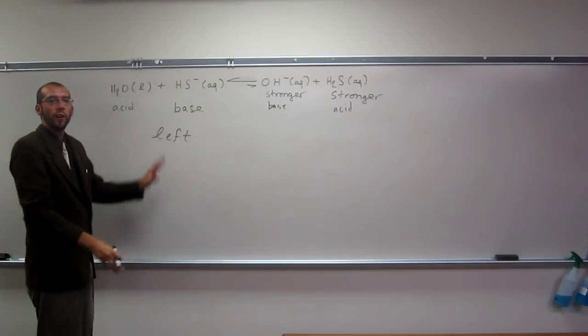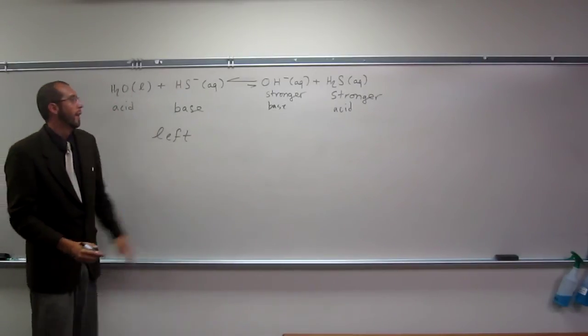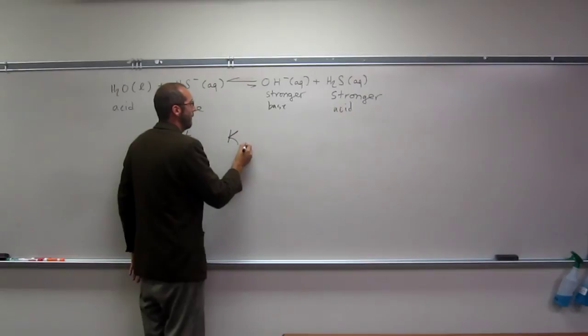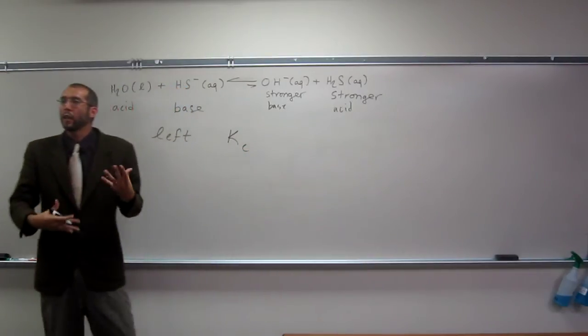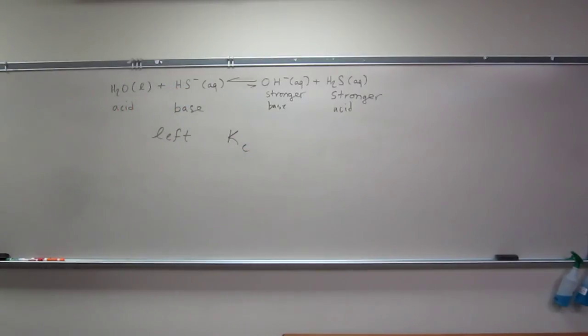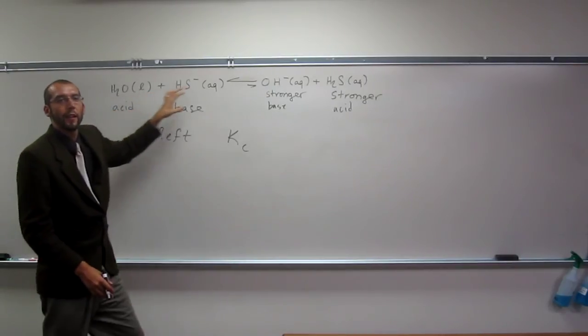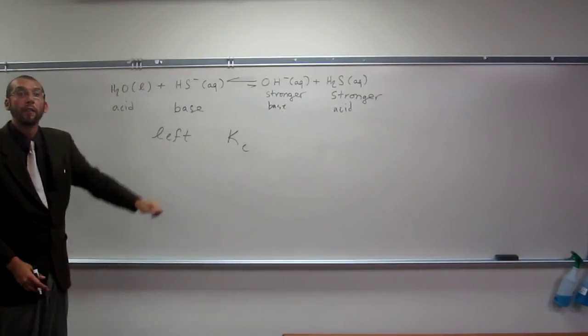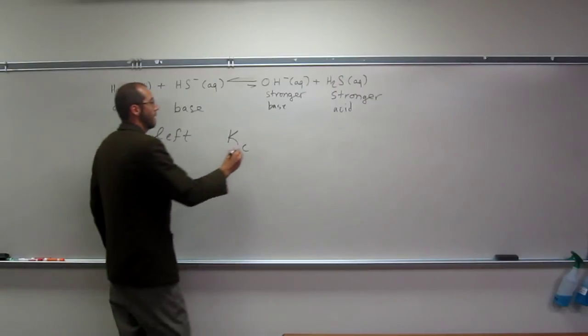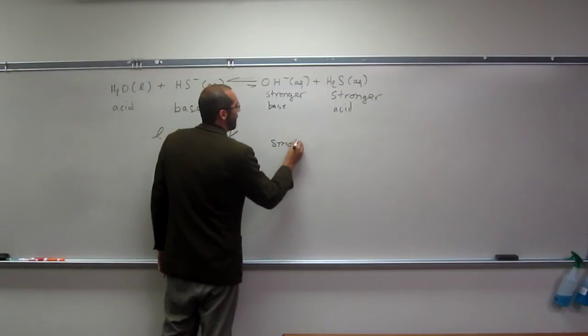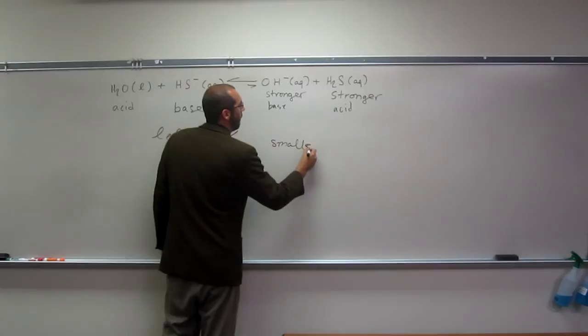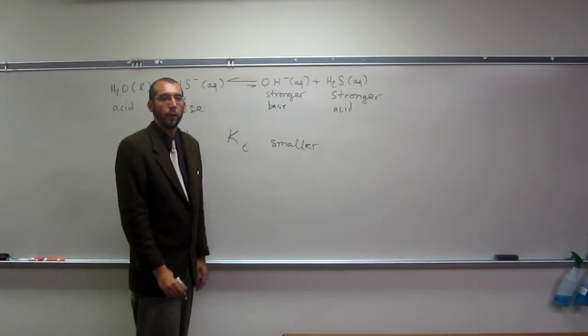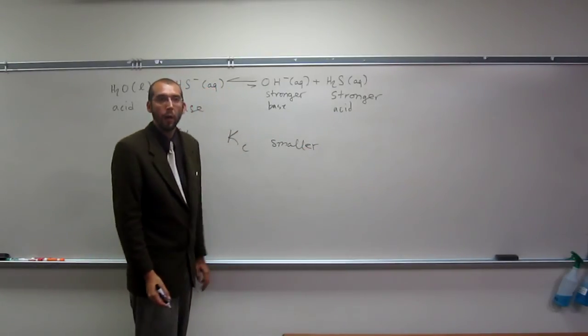So if the reaction would prefer to be on this side, if I'm looking at Kc, is that going to be a very big number or a very small number? If I have more reactants than products? Very small. Very small. So this is going to be small, and specifically is it going to be smaller than one or bigger than one? Smaller than one, yeah.